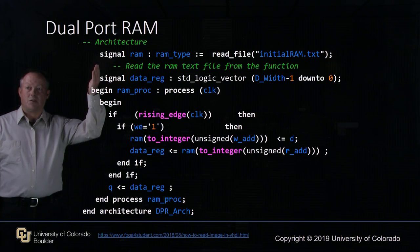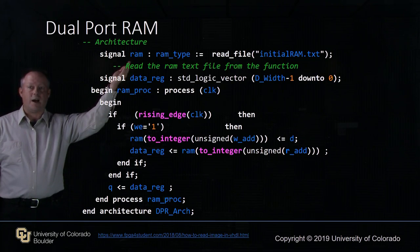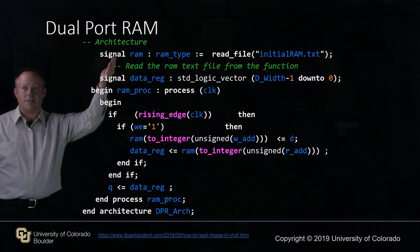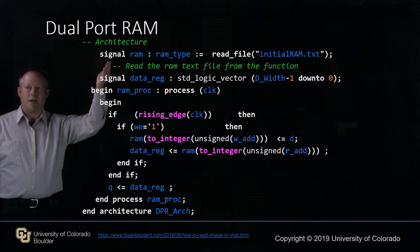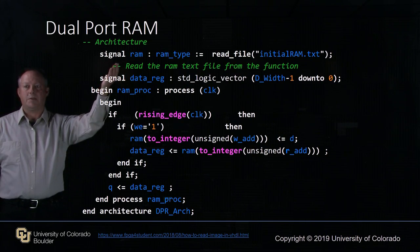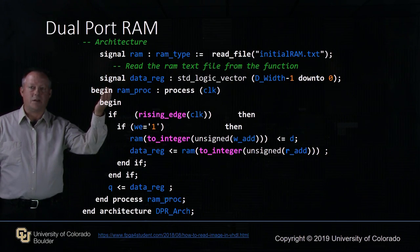We're going to create a signal called RAM of RAM type, previously declared, and set it equal to our function read file, reading a file in our local user space called initial RAM dot text. This operation loads the values in our text file through the read file function into our RAM. We also have a signal called data reg of standard logic vector data width minus 1 down to 0.